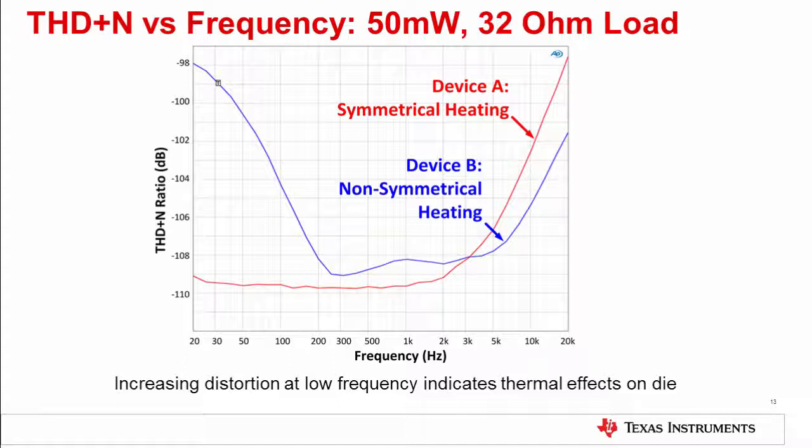This slide shows the measured results of a device that has a thermal distortion issue and one that doesn't. Again, notice that this type of distortion happens at low frequencies. From a practical point of view, a board and system level designer only needs to be aware of this issue when selecting their op amp, as they cannot change the internal layout of the op amp. Nevertheless, it is useful to know that low frequency distortion can be caused by this effect.